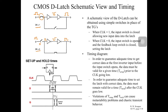The D-Latch must obey setup and hold times before the data can come out properly. To guarantee adequate time to get the correct data at the first inverter input before the switch opens, the data must be given a specific time — this is known as T-setup — before the clock goes low again. The setup time is defined as the period during which data needs to be stabilized before the clock transition.